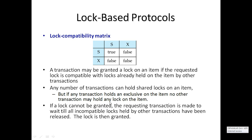Any number of transactions can hold a shared lock on an item, but if any transaction holds an exclusive lock, then other transactions must wait until the exclusive lock is released. If a lock cannot be granted, the requesting transaction is made to wait until incompatible locks held by other transactions have been released. When a transaction requests exclusive mode, it cannot get permission until the other transactions release the lock.